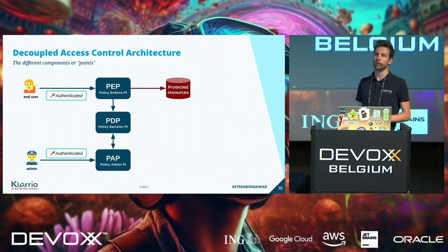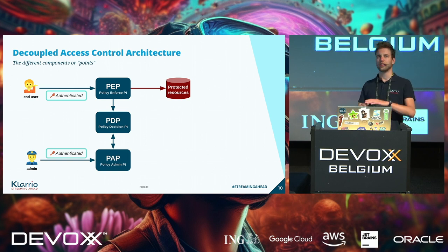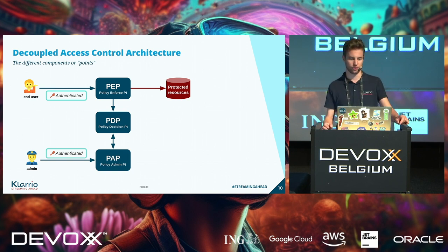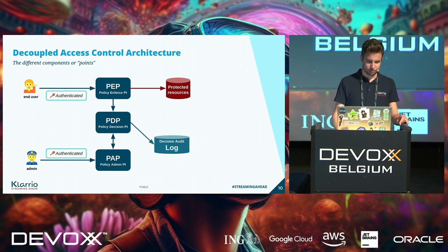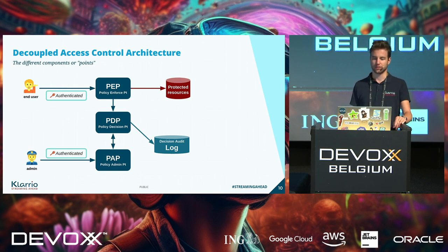A policy decision point by itself is pretty useless — you can put logic in it, but you need to manage it somehow. Someone needs to write the actual rules. That's where your policy administration point comes in. Everything that falls under an administrator modifying a policy, which has to be distributed to every policy decision point, counts as falling under the policy administration point. Another critical part of this whole system is an audit log — you want to keep a structured event log for compliance purposes, but also for analysis of every decision made by your system.